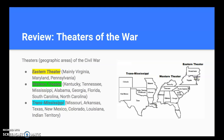We're going to be using names like Eastern Theater, Western Theater, and Trans-Mississippi as we go forward. So it's a good idea to look at what those terms mean and what regions they refer to. When we're talking about theaters of war, they refer to geographic areas — not movie theaters. Just a region or area where events take place.